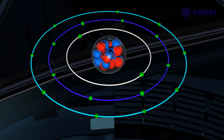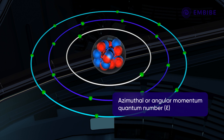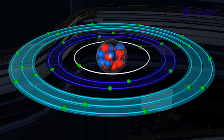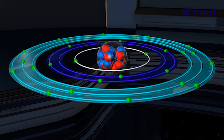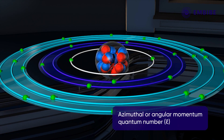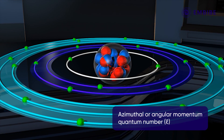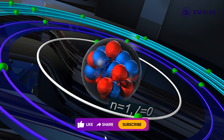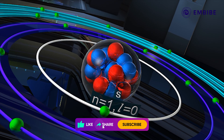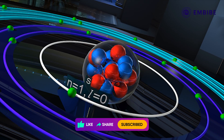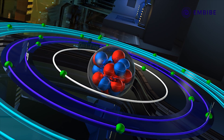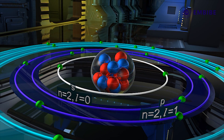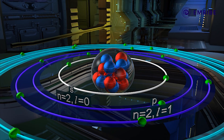Each shell is further divided into subshells, represented by the azimuthal or angular momentum quantum number, denoted by l. The first shell has no subshells, so l equals 0, and is called the s subshell. The second shell is divided into two subshells — s and p — where l equal to 0 represents the s subshell and l equal to 1 represents the p subshell.